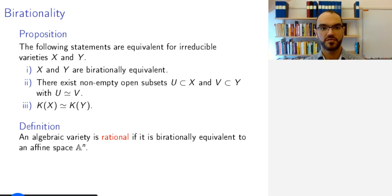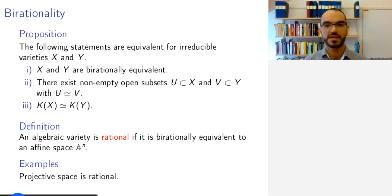And a special case of birationality, the nicest case so to speak, is birationality or birational equivalence to affine space. So an algebraic variety that is birationally equivalent to affine space is called rational. Note that this is quite far from being isomorphic to affine space. For example, by forgetting about infinity, projective space is rational, projective space is birationally equivalent to affine space.